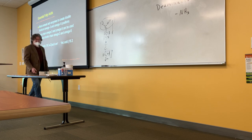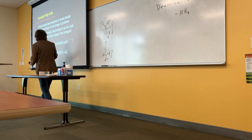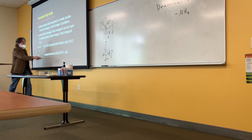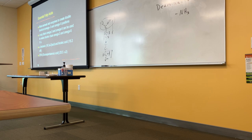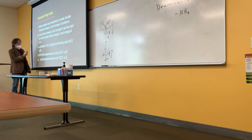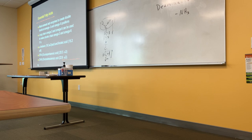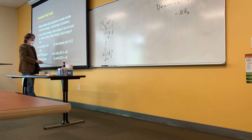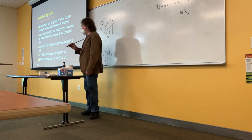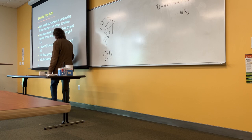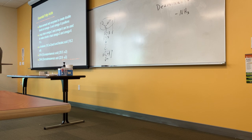Some other important ones include eicosatetraenoic acid and DHA — docosahexaenoic acid — which are found in brain tissue. These are molecules that animals have problems making; we can make some, but we don't make enough of them. Therefore we have to get them from the diet in excess. Fatty acid chemistry can be very complicated — each acid can differ in length, in saturation, and in the location of carbon-carbon double bonds.